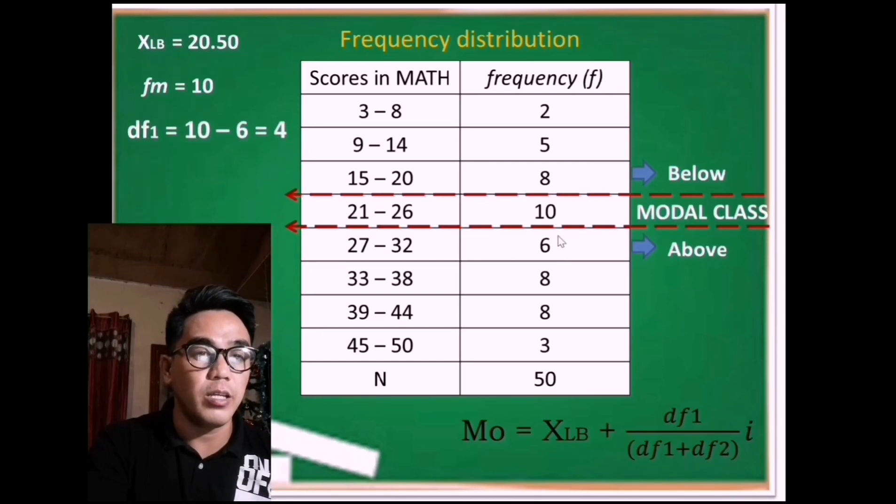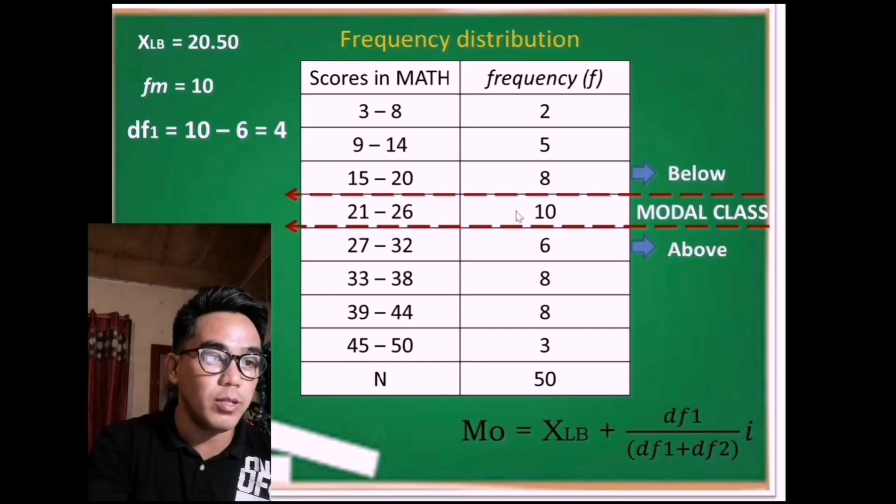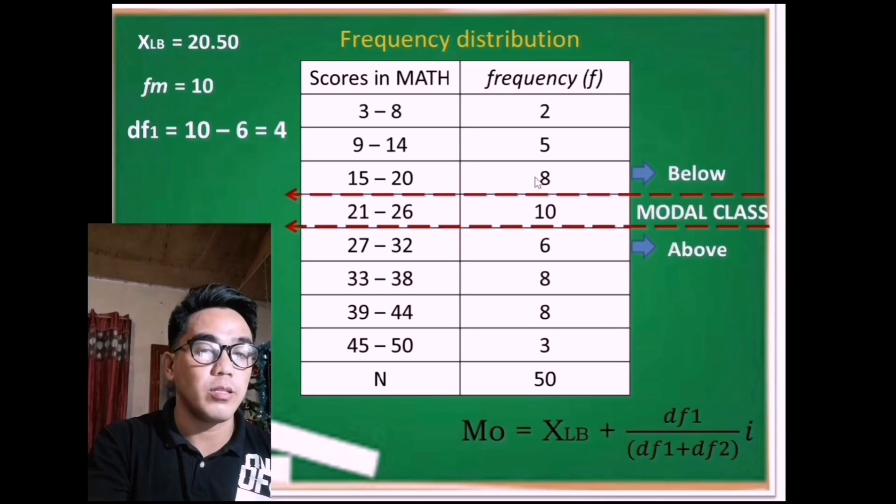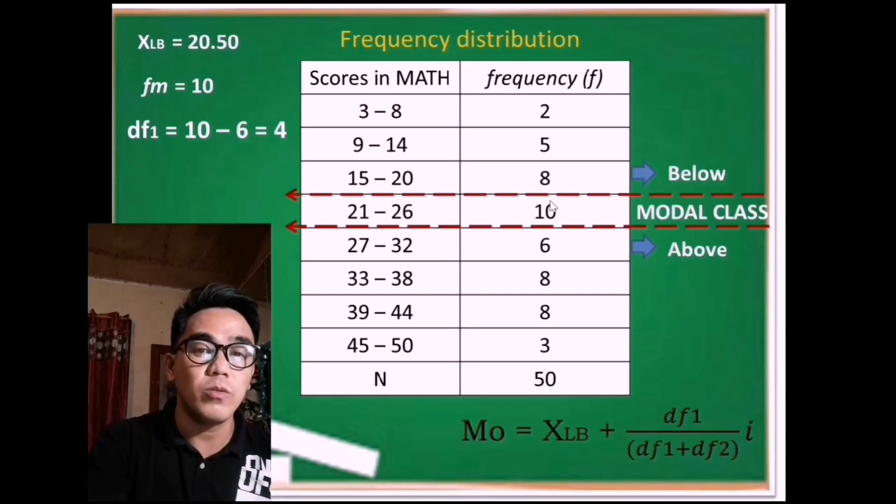On the other hand, if we're going to get the df sub 2, this is the difference between the frequency of the modal class and the frequency below it. The below frequency is 8, so 10 minus 8 is 2. Therefore, df sub 2 is 2.